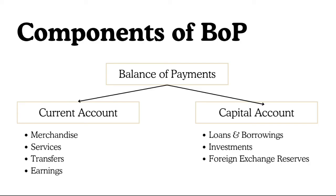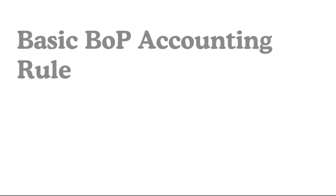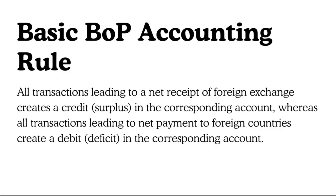It is very important to keep the basic rule of BOP accounting in mind. The basic BOP accounting rule states: all transactions leading to a net receipt of foreign exchange create a credit — that is, a surplus. If foreign exchange is coming to us, it is a credit. Whereas if the transaction leads to a net payment to foreign countries — that is, foreign reserves going out — then it is a debit, a deficit in the corresponding account.